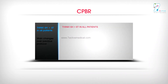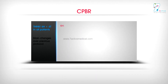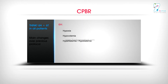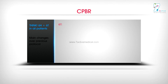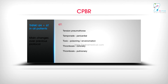Think 6H plus 6T in all patients. 6H: Hypoxia, Hypovolemia, Hyperkalemia or Hypokalemia, Hypoglycemia, Hydrogen ion acidosis, Hypothermia. 6T: Tension pneumothorax, Tamponade (pericardial), Toxic poisoning or envenomation, Thrombosis (coronary), Thrombosis (pulmonary), Trauma and myocardial contusion.